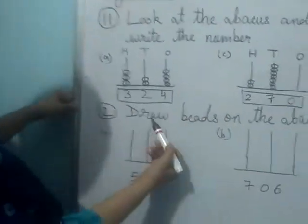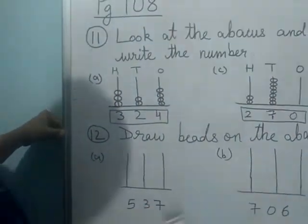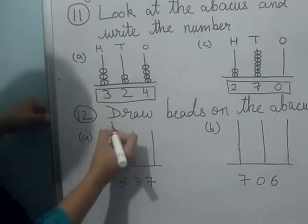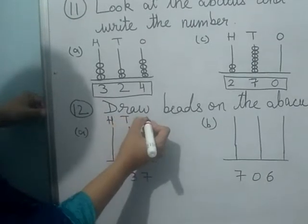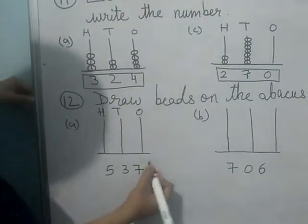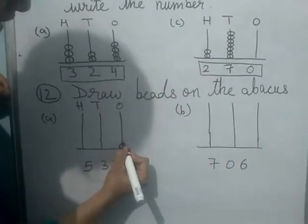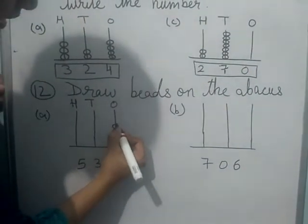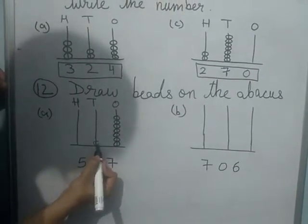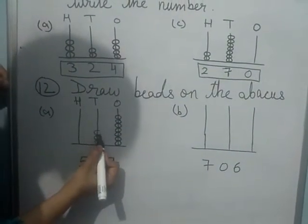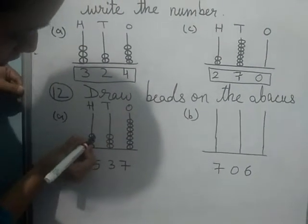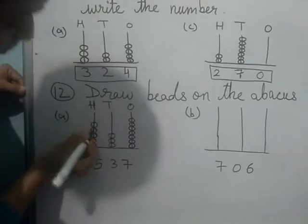Now draw beads on the abacus. The number is 537. So in 100's place, 10's place and 1's place. In 1's place, how many beads? 7. So draw 7 beads: 1, 2, 3, 4, 5, 6, 7. In 10's place, how many beads? 1, 2, 3. And in 100's place, 5 beads: 1, 2, 3, 4, 5.